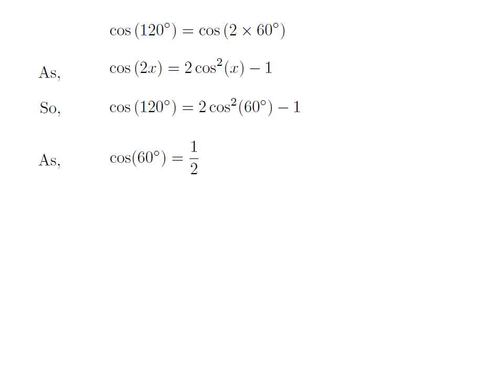We know the value of cosine of 60 degrees is equal to half. So plugging the above values in the expression, cosine of 120 degrees is equal to 2 into square of half minus 1.